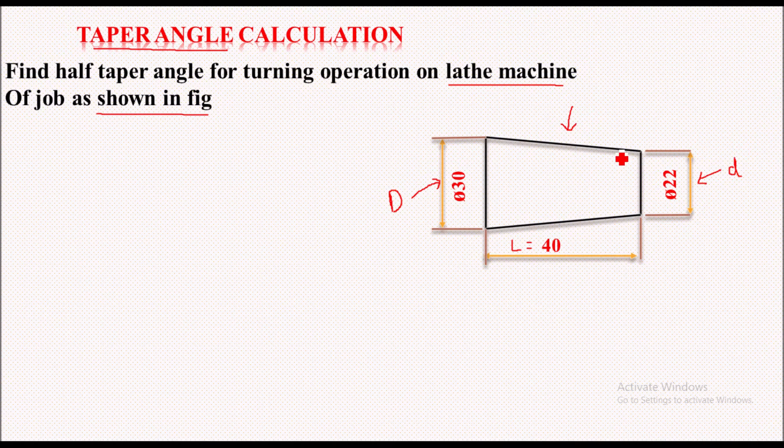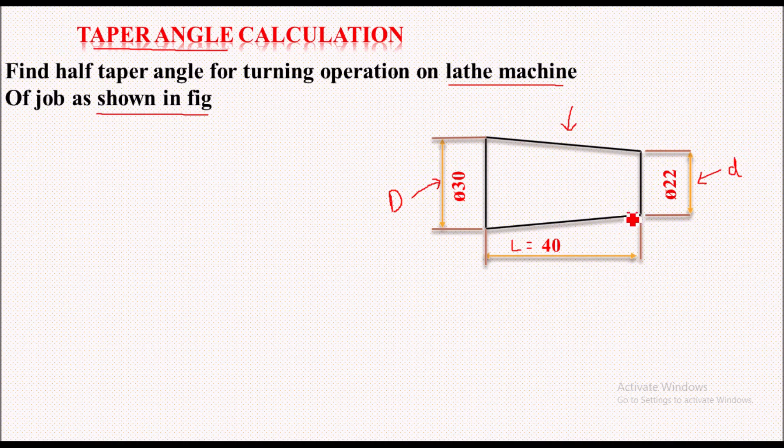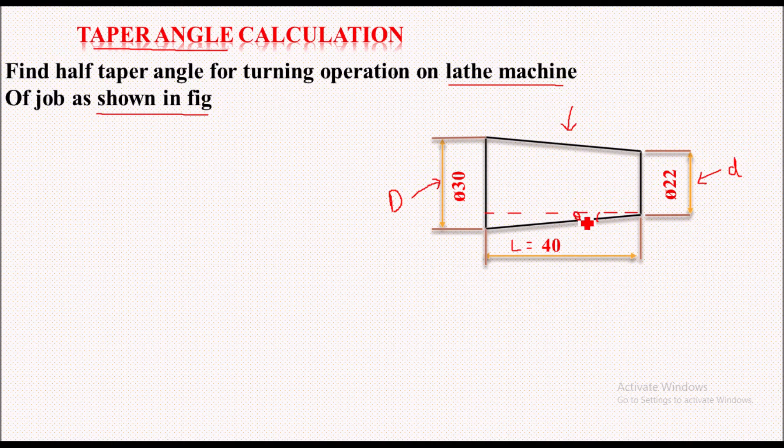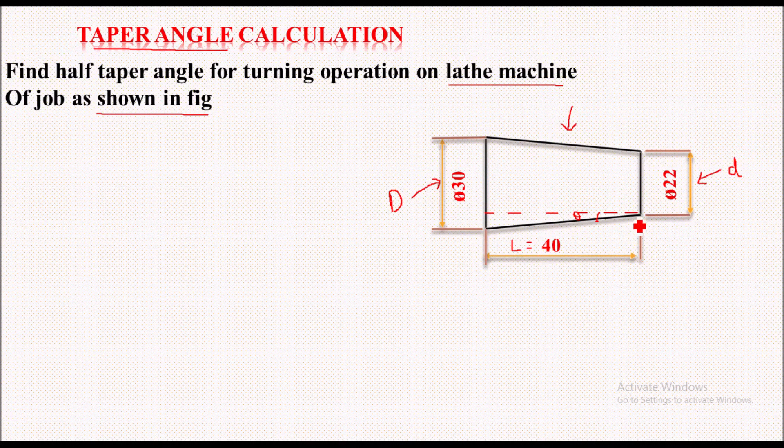Now we have to calculate the half taper angle. We have a taper on both sides; half taper angle means one side taper. So we have to calculate the value of theta over here, that is the half taper angle. For calculating this angle we will use the trigonometry relation, we will use tan theta.